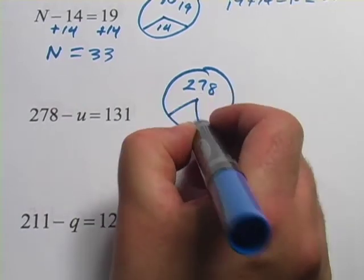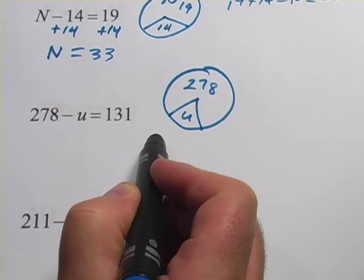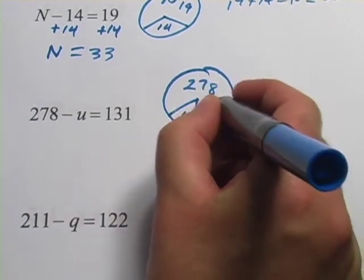Some sliver we're taking away is u. We're minusing u, so we're going to take that sliver away. And what's left is 131.